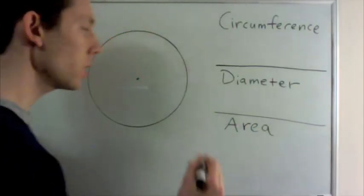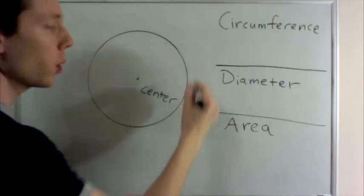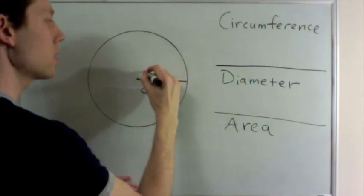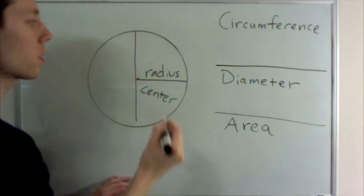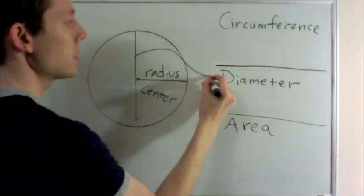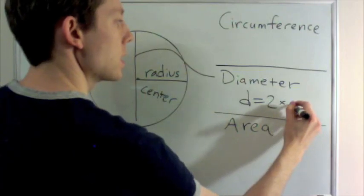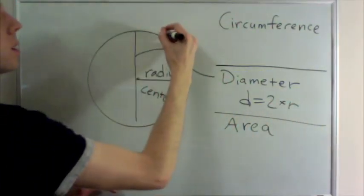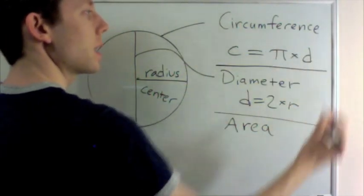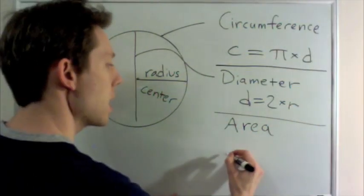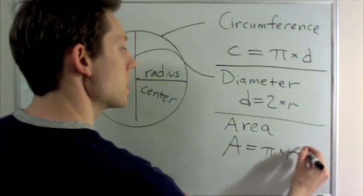The point in the middle of the circle is called the center. Every point on the circle is the same distance away from the center, and that distance is the radius. If we go all the way across the circle, that is the diameter. The diameter is always twice the radius. And all the way around the circle is the circumference. The circumference is always equal to PI times the diameter. We also saw that the area of a circle is equal to PI times the radius squared.